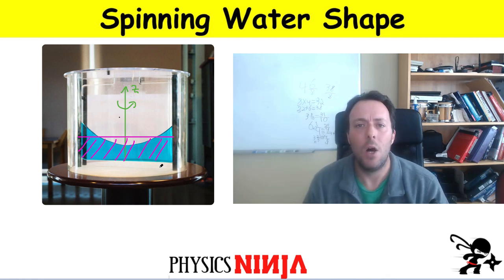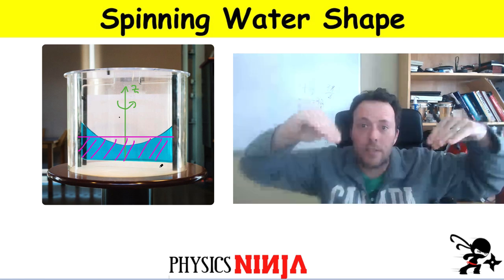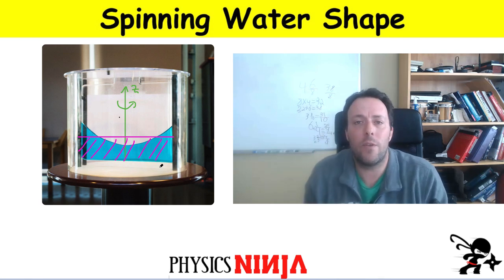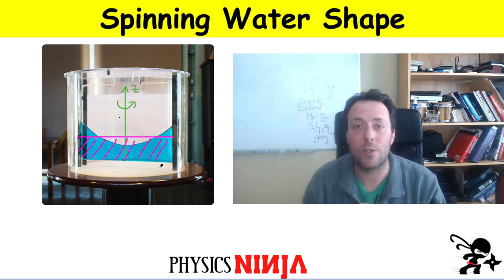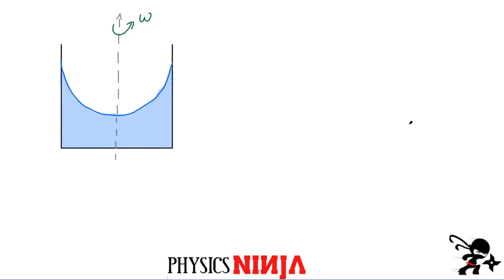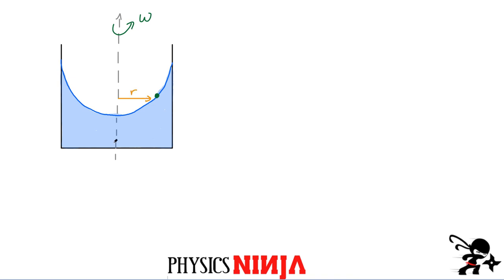Let's look at the free body diagram. We're going to consider a single droplet at the surface of the spinning fluid. It's going around in a circle, therefore there have to be forces acting on it. We'll set up Newton's laws and solve them to obtain the shape. At the end we have to conserve the total volume inside the container. This fluid has been spinning for a bit and achieved its shape. I want to consider one particular water droplet at the surface — its trajectory has to be a circle, tracing out a circle of a particular radius, undergoing uniform circular motion.